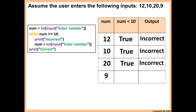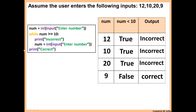The next number inputted is 9. 9 is not greater than or equal to 10, so that's false. Then it will display 'correct', because we go to the end of the program. Because it's not indented, it will only be displayed once the loop breaks.